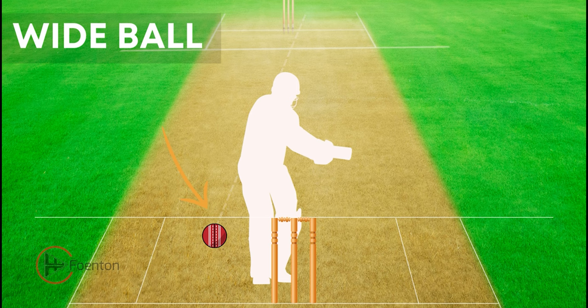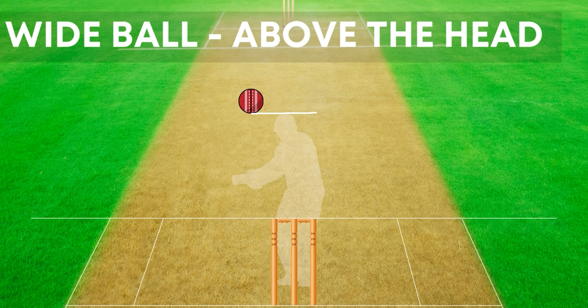Remember, any ball that stays down the leg side of the batsman must be called a wide ball. Lastly, if the ball has gone past above the head after bouncing off the pitch, it should be called a wide ball. This will also count as one delivery for the over.